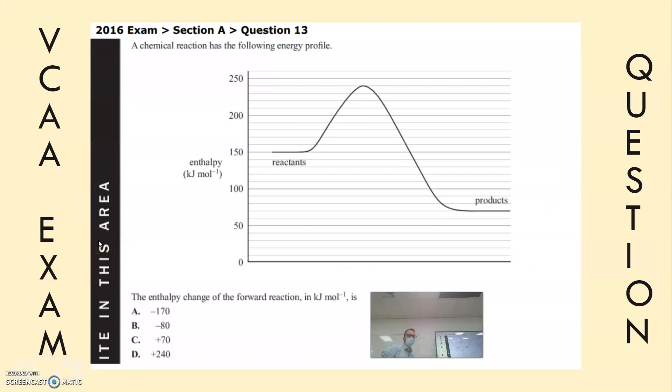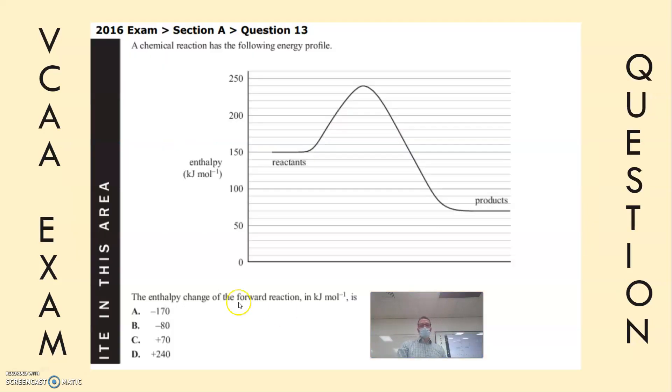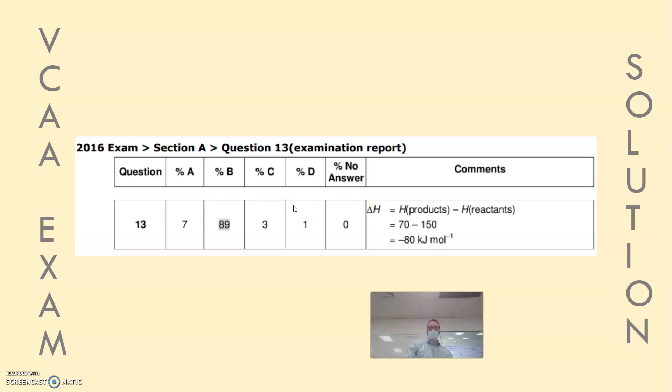Let's have a look here. 2016 exam. We've got an energy profile diagram. Enthalpy of the forward reaction. So the forward reaction is as displayed. We'll talk about backwards reactions more so when we get to equilibrium. So the enthalpy of the forward reaction in kilojoules per mole is what? How'd you work that out? Products minus reactants. So products is at 70 minus 150 gives us negative 80 kilojoules per mole. 89% of students got that right.